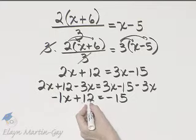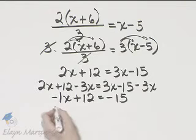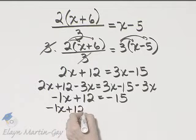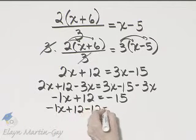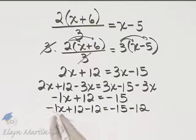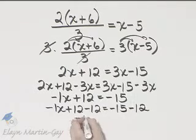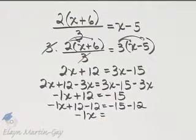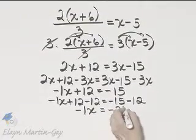Now I will subtract 12 from both sides. So here's my left side. I'll subtract 12. Here's my right side. I'll subtract 12. The left side, I have negative 1x, or negative x. Negative 15 minus 12, that's negative 27.